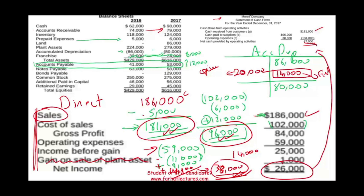The reason is we expensed 102,000 but only paid 96,000. We expensed 59,000 but only paid 38,000. From the cash perspective we received less cash from sales, but overall the operating cash flow was more than net income. This is how you prepare an operating section using the direct method of the statement of cash flows.